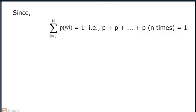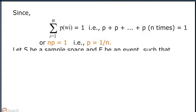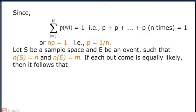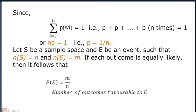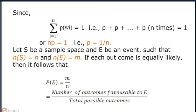Since summation from i equals 1 to n of probability of omega_i equals 1, that is P plus P up to n times equals 1, or n times P equals 1, that is P equals 1/n. Let S be a sample space and E be an event such that n(S) equals n and n(E) equals m. If each outcome is equally likely, then it follows that probability of E equals m/n. That is, the number of outcomes favourable to E divided by the total possible outcomes.